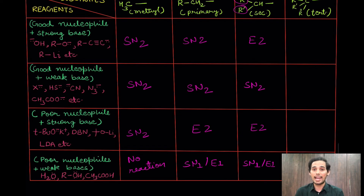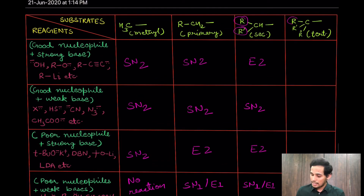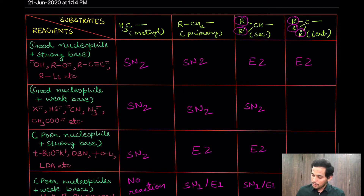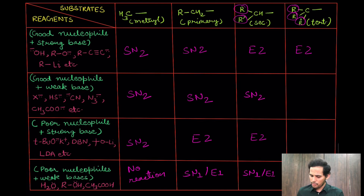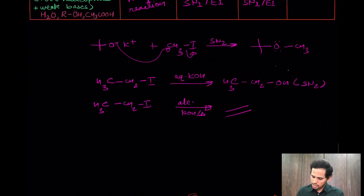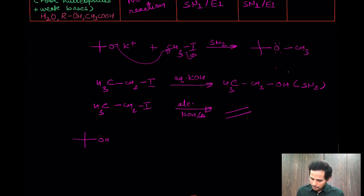Now tertiary substrates have one special property: they will not undergo SN2 under any circumstances. The steric hindrance from the three bulky groups is so great that even with a good nucleophile and strong base, instead of SN2, E2 will definitely occur. Tertiary substrates are the most reactive substrates when it comes to E2. With a good nucleophile and weak base, this is a more complicated case — the base is weak, the nucleophile wants to attack but the tertiary substrate will not allow a direct attack.